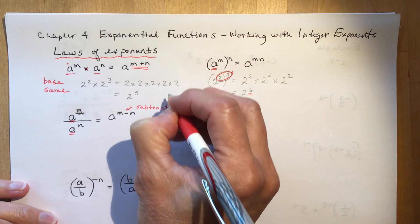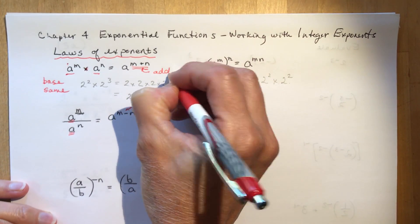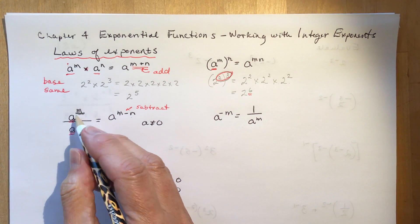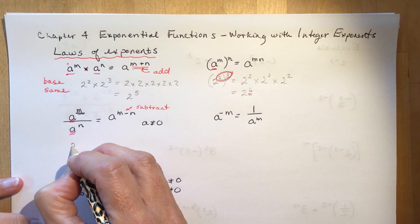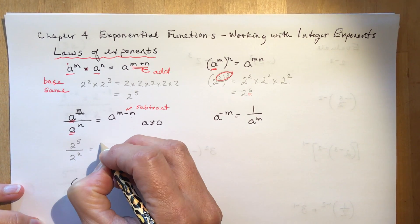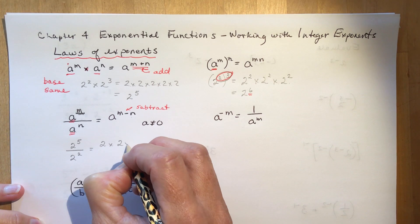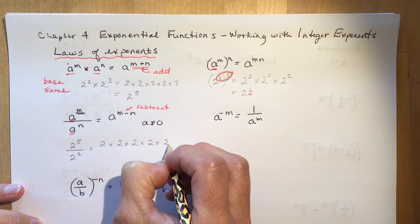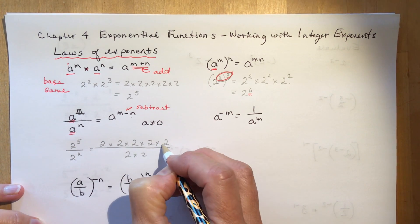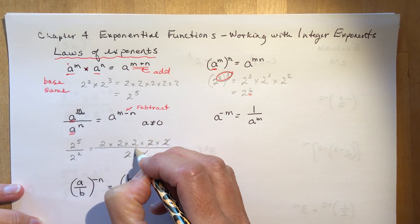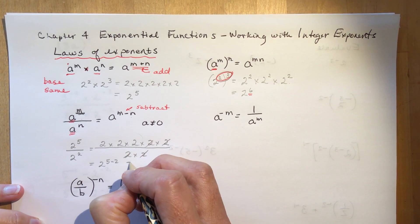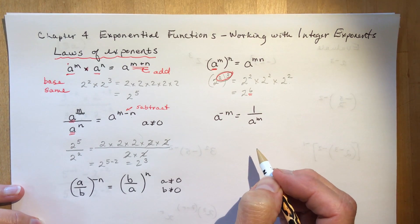You add the exponents when multiplying — you've done this before. Let's say you have two to the power of five divided by two squared. If you write it out, you'd have five twos on top and two on the bottom. Simplifying, you're left with three twos, so that's five minus two: two to the power of three. Proven.